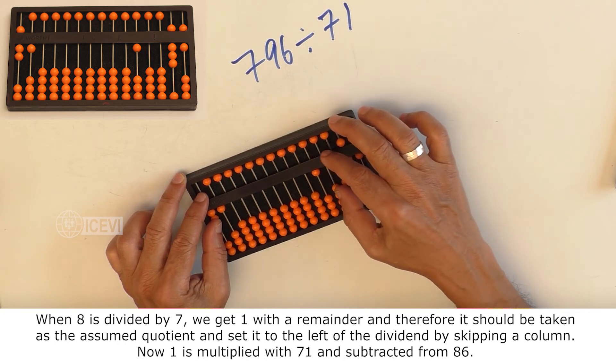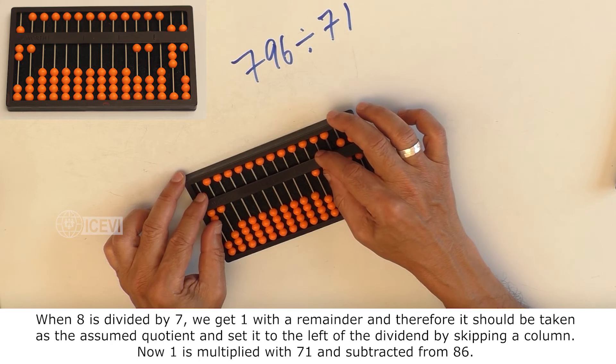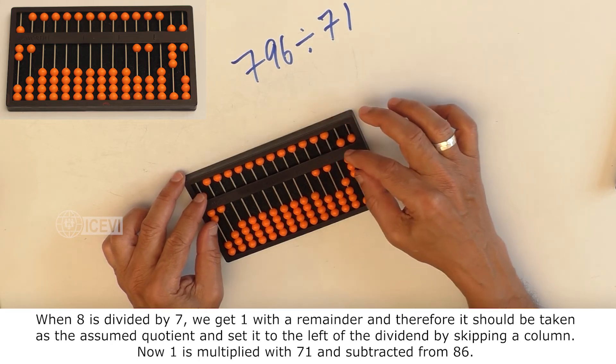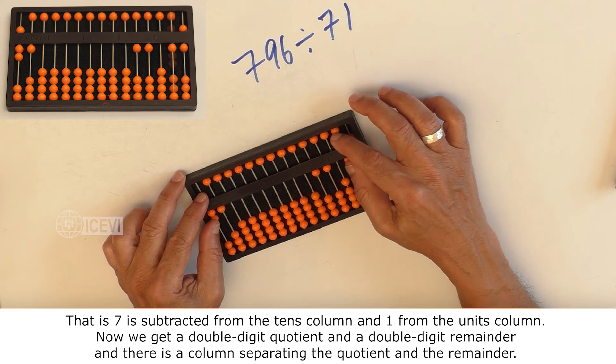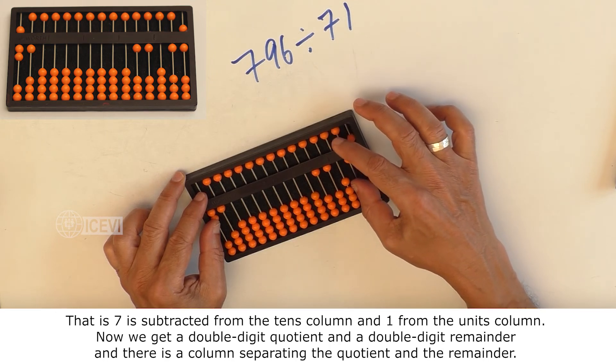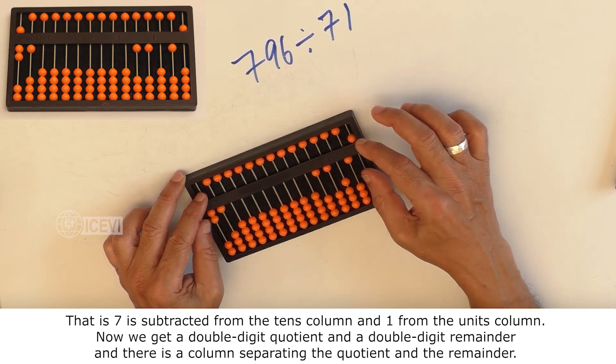Set it to the left of the dividend by skipping a column. Now, 1 is multiplied with 71 and subtracted from 86. 7 is subtracted from the 10s column and 1 subtracted from the units column.